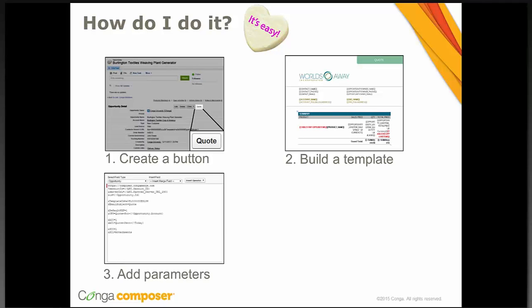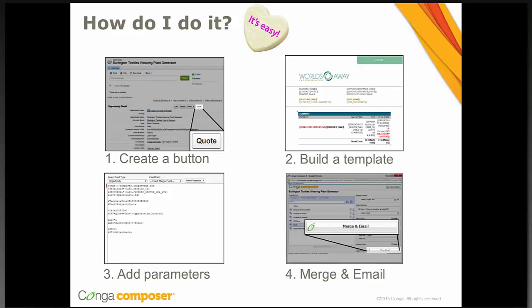The third step is adding parameters. If you wanted to, you could jump directly into the fourth step, which is clicking the merge button and running the merge process to merge your quoting data into the template. But looking back at our poll question, most of us are trying to solve a variety of issues. One of the ways to do that is by customizing your solution with parameters in order to use a variety of features in Composer and kill multiple birds with one stone in a single solution. I'll also show you where you can go to find the full list of available parameters for use in your quote solution.